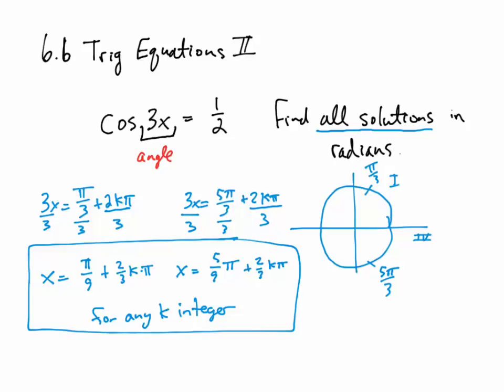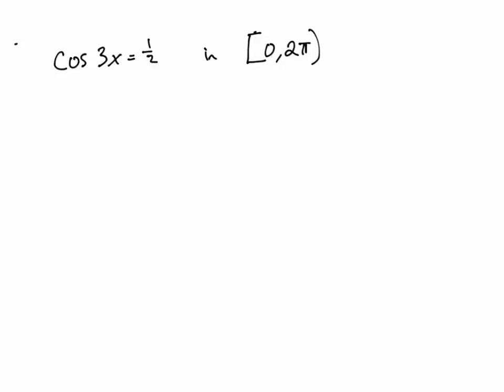Now let's look at an example where instead of finding all solutions, we find solutions within a specified interval. This equation is basically the same as before — cos(3x) = 1/2 — except we find all solutions in the interval 0 to 2 pi. We solve it the same way: cosine equals 1/2 at pi over 3 and 5 pi over 3. So 3x equals pi over 3 plus 2k pi, and 3x equals 5 pi over 3 plus 2k pi.